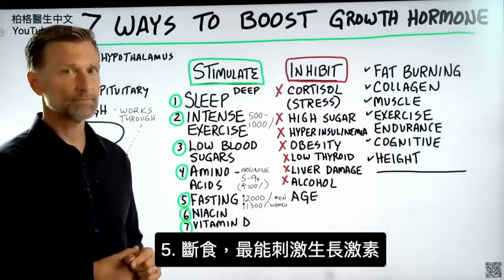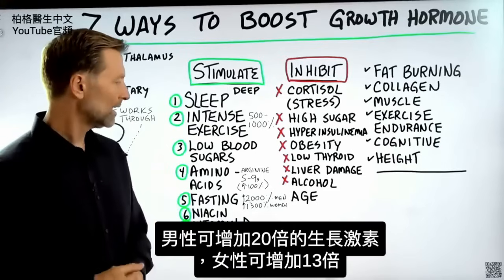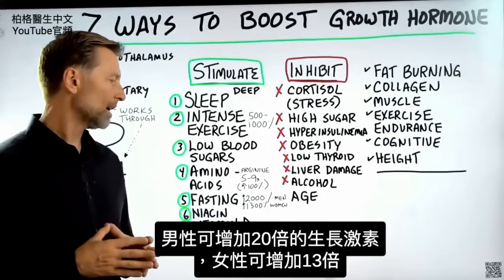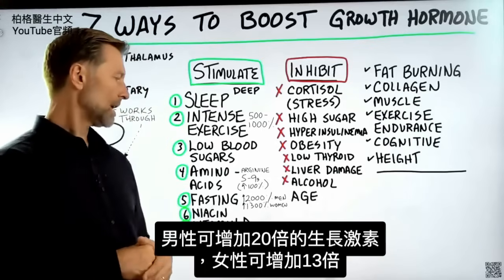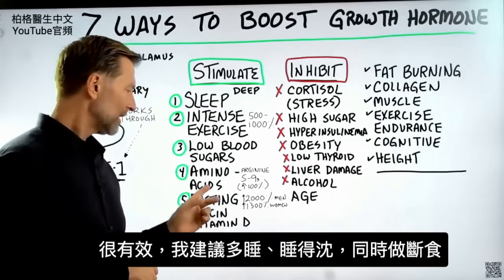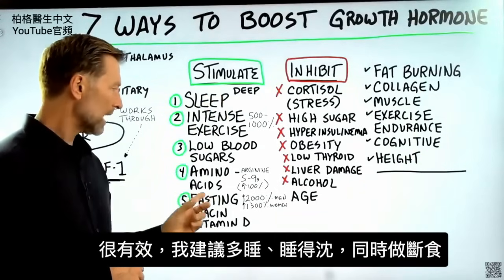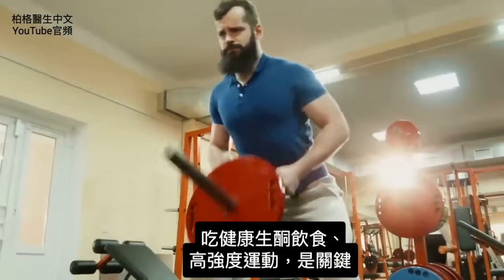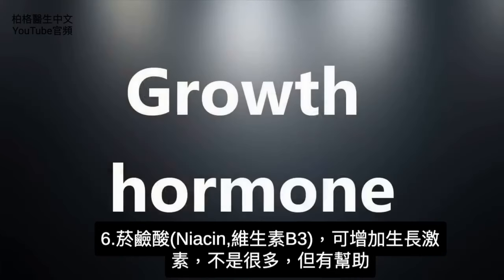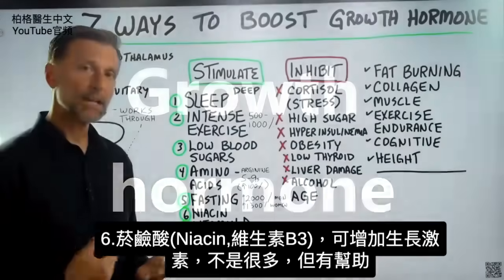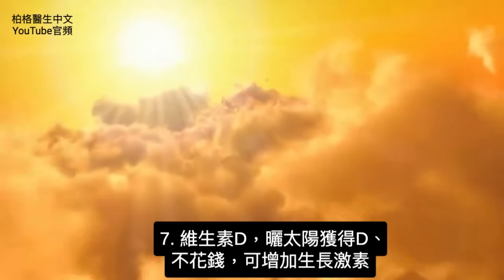Number five: fasting. Fasting has the largest influence over growth hormone. You can potentially increase growth hormone by up to 2,000% if you're male, and 1,300% if you're female. So I'm definitely recommending sleeping more and deeply, adding fasting, doing keto, and intense exercise — those are the key factors. You also have niacin — vitamin B3 — which has the potential to increase growth hormone, not by a lot but it can boost it. And vitamin D, which you can get from the sun at no cost, can also increase growth hormone.